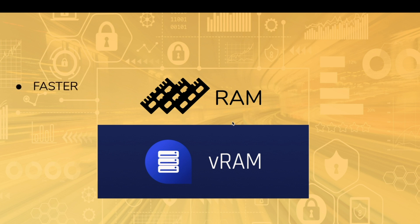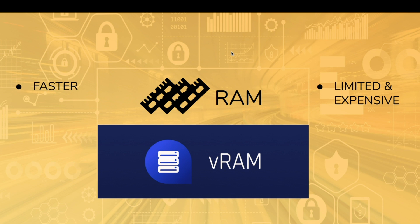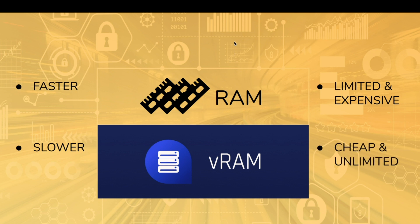RAM is faster but limited — there's about 128 gigabytes, maybe a little more since it's increasing over time, and it's expensive. That sounds like a lot, but 128 gigabytes is a very small amount for the total storage of all the applications, users, games, and interactions on EOS. VRAM is a little bit slower — there's a latency to warm up information from VRAM into RAM so that it can be used — but it's cheap by comparison and virtually, potentially unlimited.